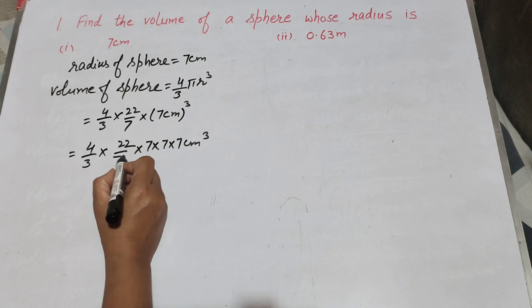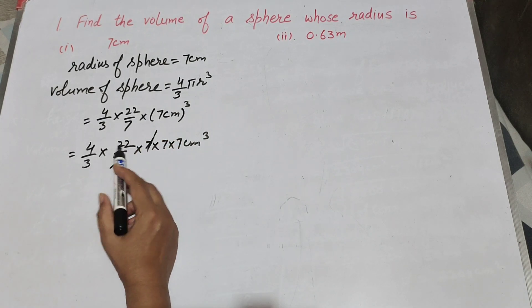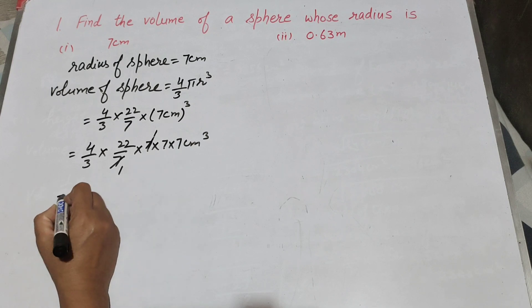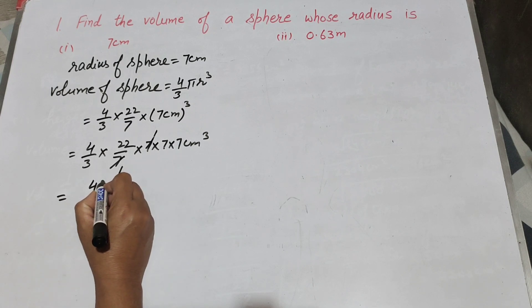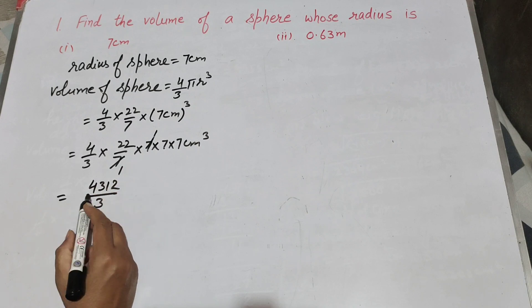Now 7 in denominator both are cancelled. 4 times 22 times 7 times 7 times 7. On multiplying them we get answer 4312 over 3 cm cube.